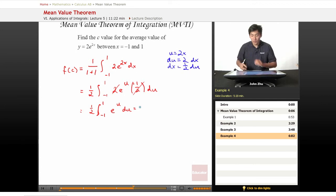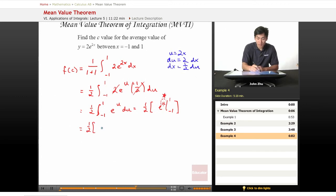And e to the u, the integral we know is just e to the u, so 1 half times e to the u from 1 to negative 1, which is 1 half e to the 2 minus e to the negative 2.